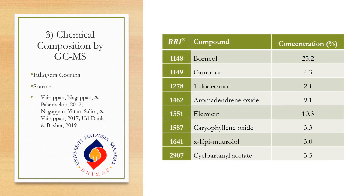Proceeding with chemical composition by GCMS. To minimize analysis, the highest oil yield sample — from the drying condition at 65°C — was selected. However, drying conditions affect the composition of the extracted oil because volatile compounds can transform due to the formation of secondary aroma compounds. For Etlingera coquinea, a total of eight compounds were detected, sourced from Varapan, Nagapan, and Palanivelo (2012), and also from Nagapan, Yatau, Salim, and Varapan (2017).